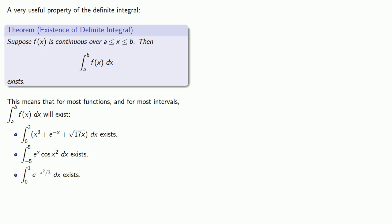And similarly for this function, no function has derivative e^(-x²/3), but nevertheless, because it's continuous over the interval from 0 to 1, we know the value of the definite integral exists, and so we can approximate it by using the Riemann sums.